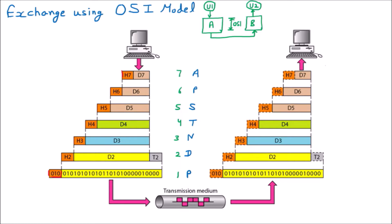I am user one, sending the data from my system. I started the data transmission and sent you a data. Remember: seven means application layer, six means presentation, and so on. So D7 means the data at the application layer, because seven is the application layer.